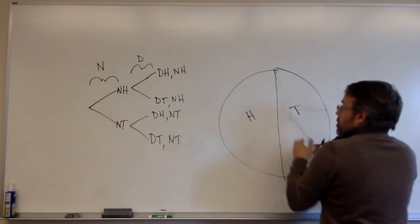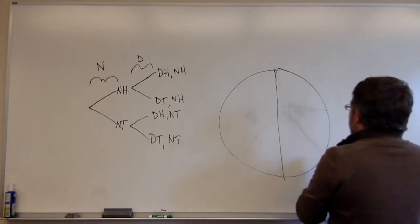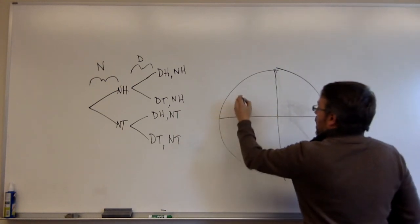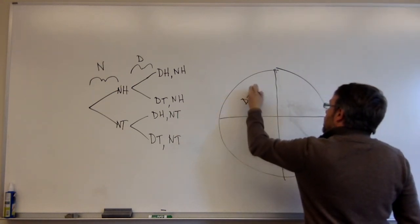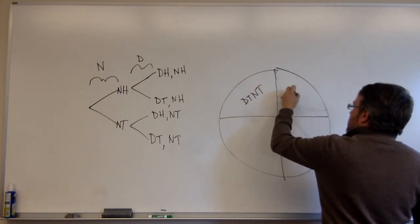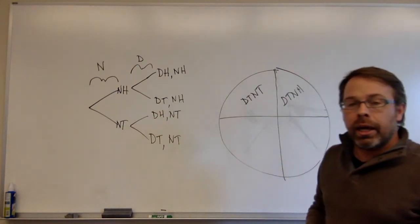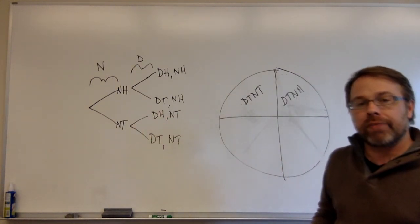And we can also divide it up in terms of our two coins. If we flip a dime and a nickel, then we'd have dime heads nickel heads, dime tails nickel tails, dime tails nickel heads, and so forth. So these are the two major ways we're going to be using to talk about probabilities in the next videos.